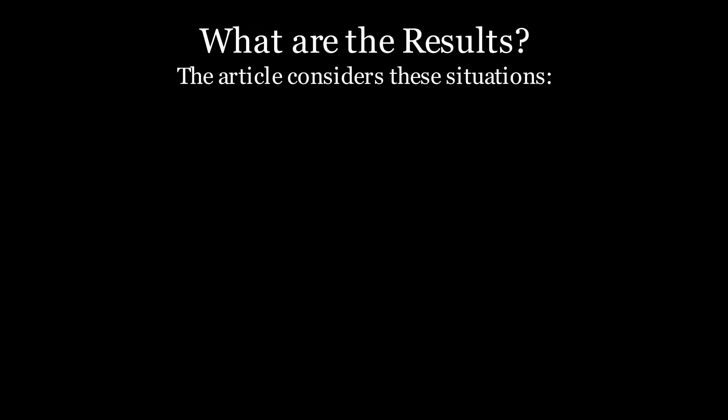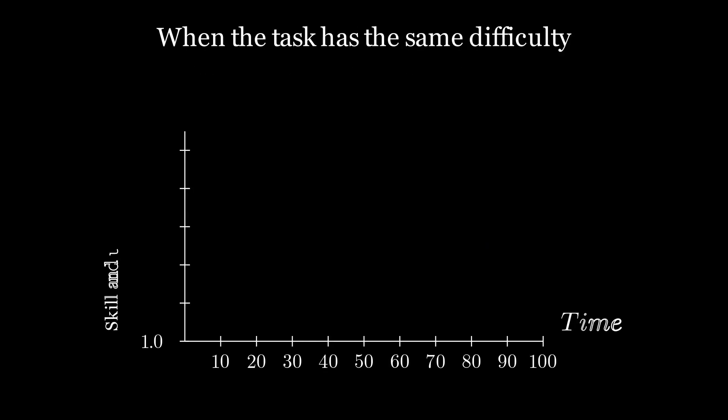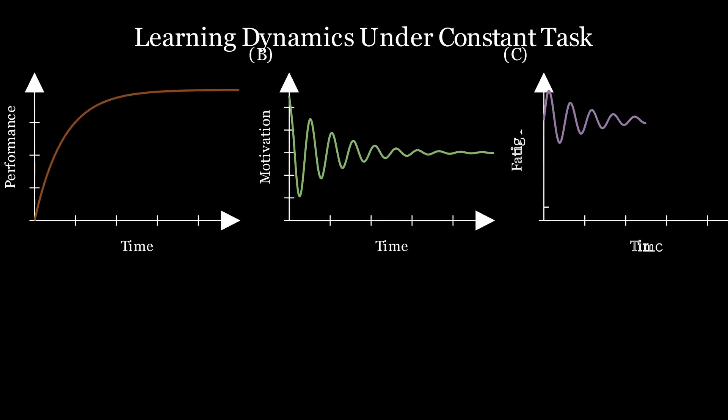So, what are the results? The article considers these situations. When the task has the same difficulty. When we have step-wise increase in the task difficulty. When we have continuous increase in the task difficulty. And the shocking situation, which I talked about earlier. So, in the first situation, we see as time passes, the individual's skill development curve slows down. And so is the motivation. As you go on, you get more tired and you like to rest more because of the fatigue you're bearing. And this is what the dynamics of the system tells us. This is not a statistical study. It's purely theoretical.